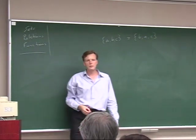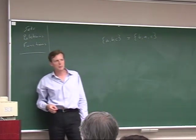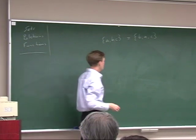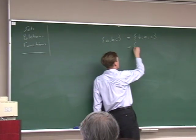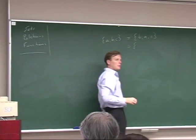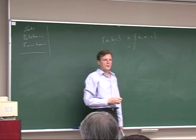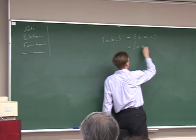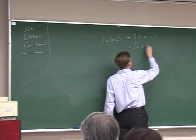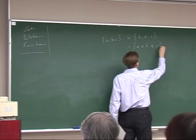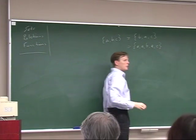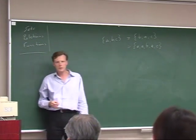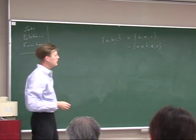Two sets are identical if they have the same members, and also listing members multiple times doesn't change anything. So the set containing A, A, B, A, C is the same as the set containing A, B, C, right?